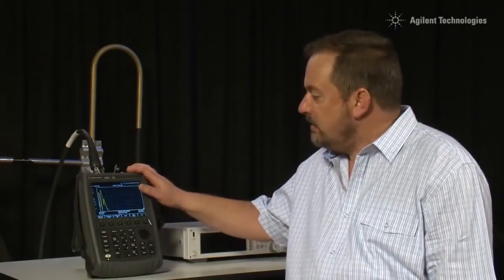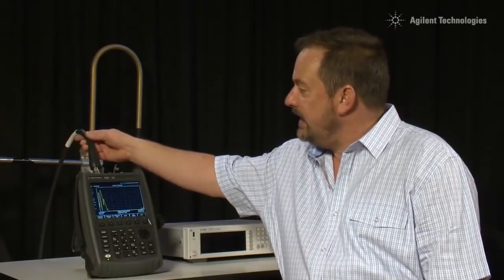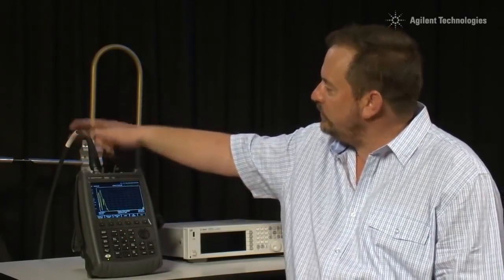So now, without having made any changes to the FieldFox setup, we are still measuring Distance to Fault, and we have got the 1.5m fly lead, and then that is joined to a short 1 or 2m cable that is attached to the antenna.